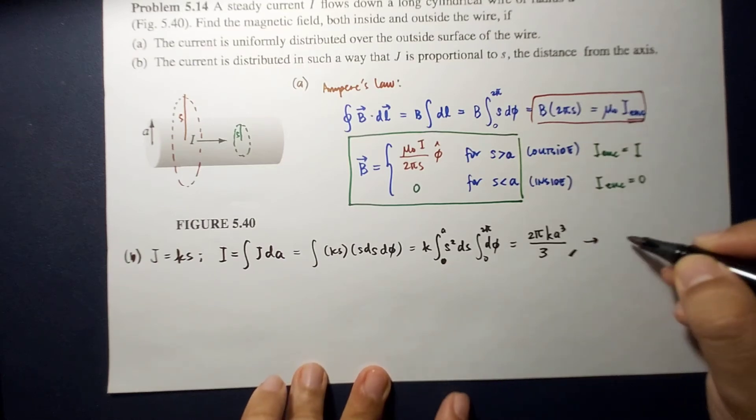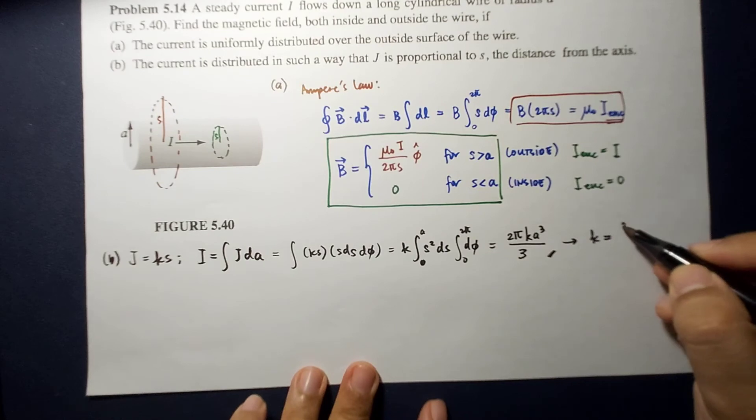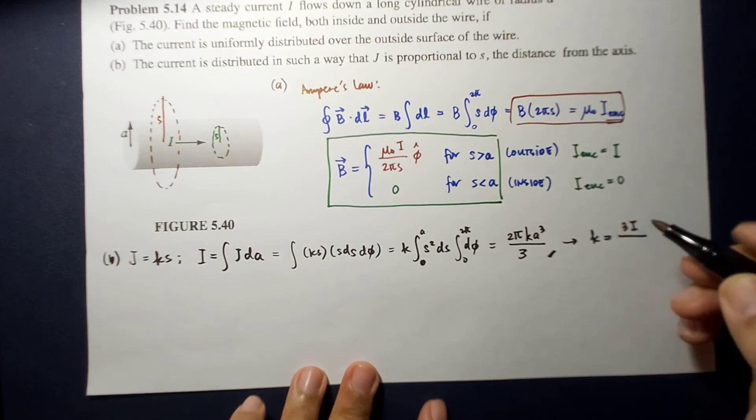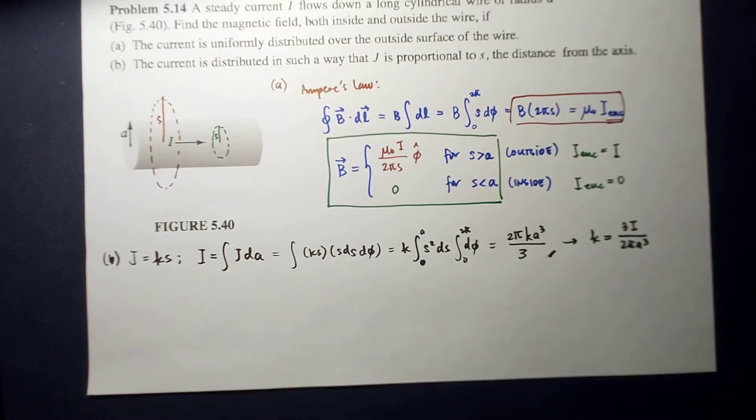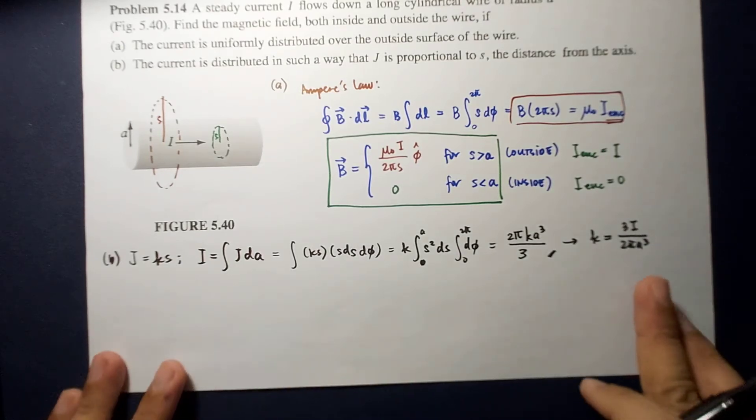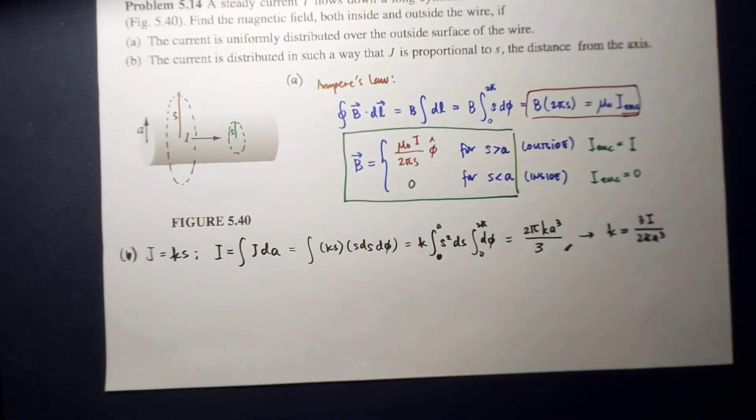So, therefore, K is now equal to 3I over 2 pi A cubed. So, why do we need this? We're going to need this because we need to find the enclosed charge.